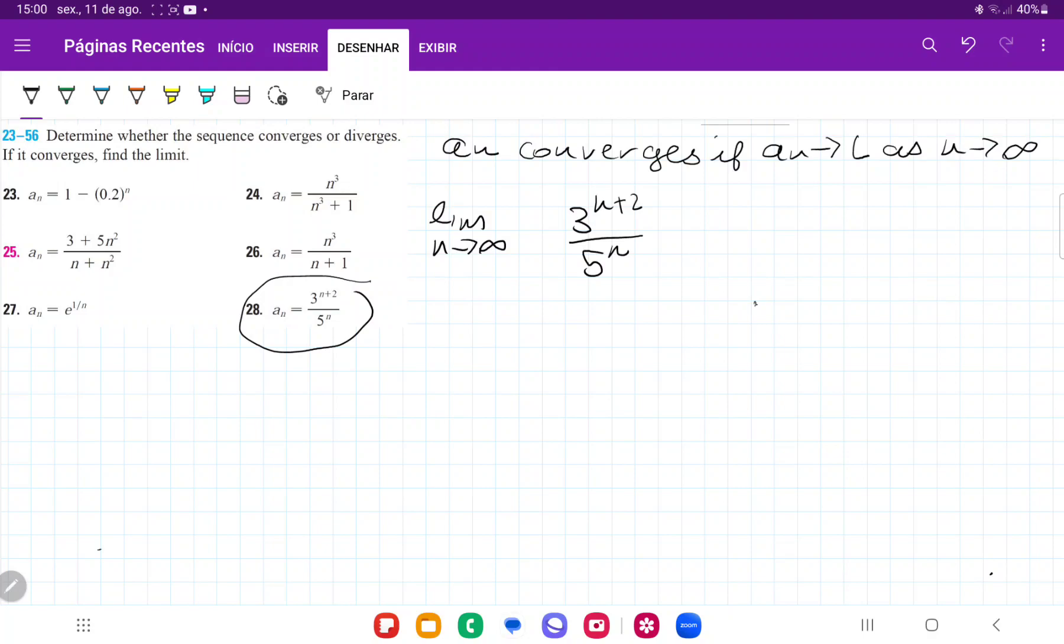And so on the top, I'm just going to transform this. So 3^(n+2) over 5^n, this is equal to 3 times 2 times 3 to the power of n, 3^2 times 3^n over 5^n. Because when we multiply the same base, we just add the exponents.